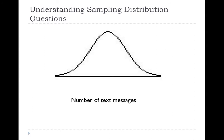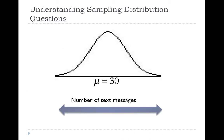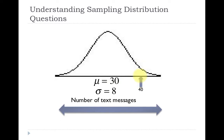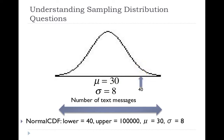Here's how we would answer it. The horizontal axis is labeled with the variable number of text messages, and in the center we label the mean and standard deviation of the population. Here we have few text messages on the left and many text messages on the right, but it's not based on a sample mean. We're looking at 40 text messages per month. With a population mean of 30, the point 40 is on the right side of center, so we're looking for the area from 40 to positive infinity with a mean of 30 and a standard deviation of 8.